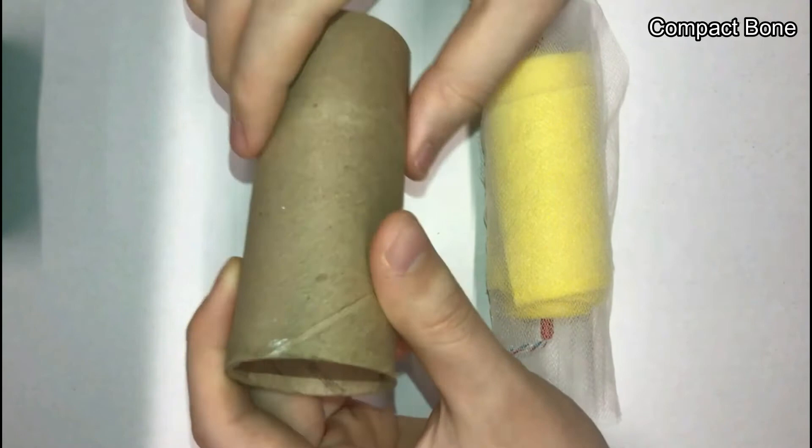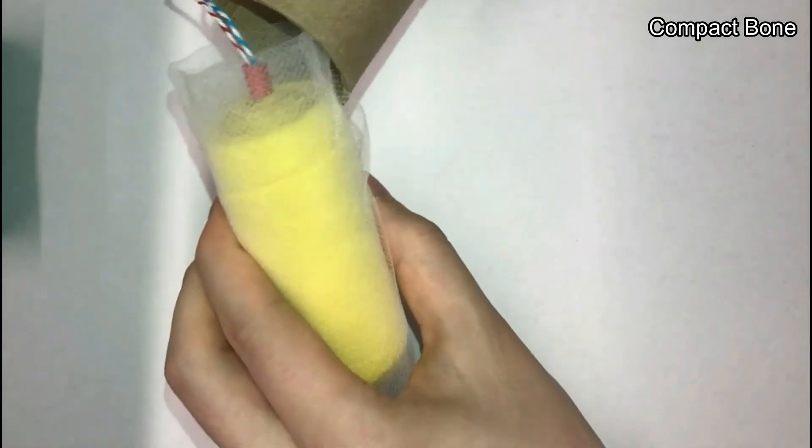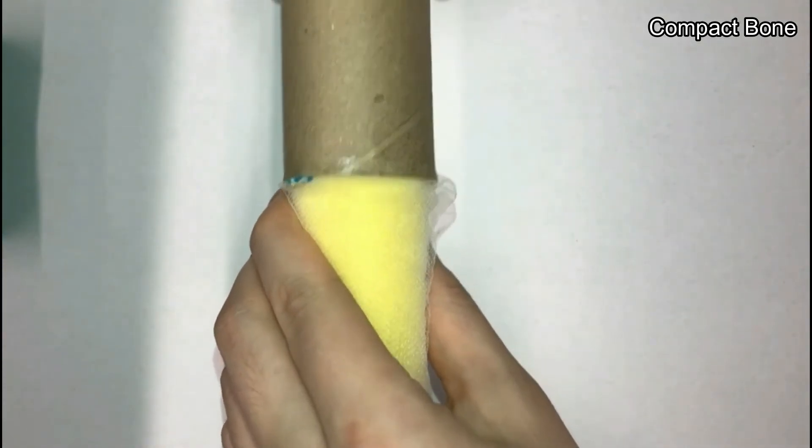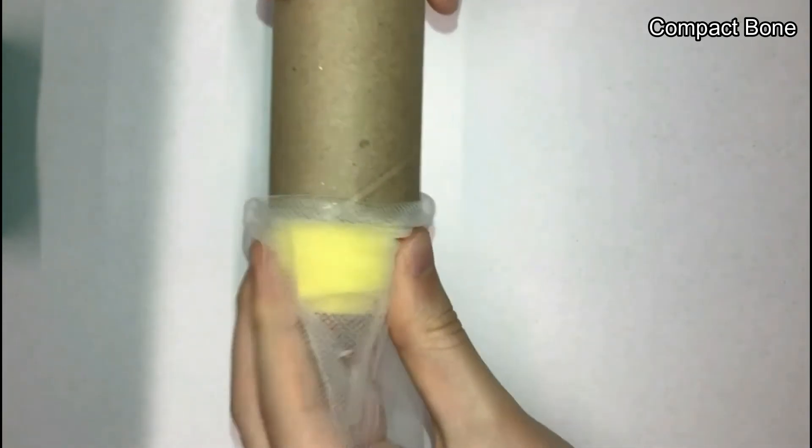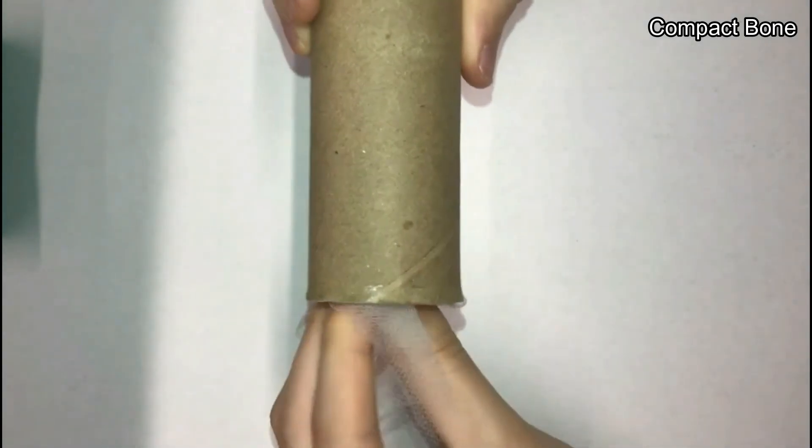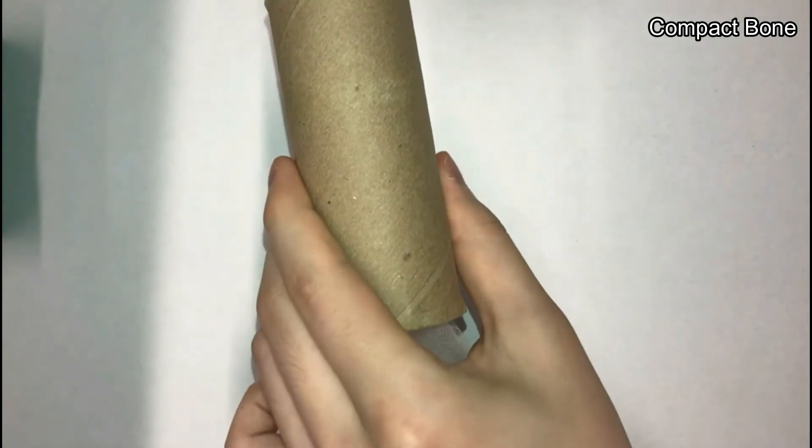Outside of the spongy bones comes the compact bone, which is represented as the hard brown cardboard tube. What do you think the function of the compact bone is? You may have guessed it. It's hard, which means it's there for both protection and support.